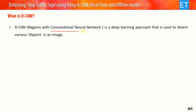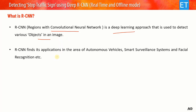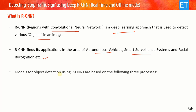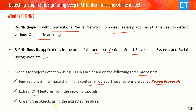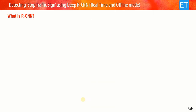RCNN stands for Regions with Convolutional Neural Network. It's a deep learning approach used to detect various objects in an image. RCNN finds applications in autonomous vehicles, smart surveillance systems, facial recognition, and more. Models for object detection using RCNN are based on three steps: first, finding regions in the image that might contain an object — called region proposals; second, extracting features from these regions using CNN; and third, classifying objects based on those extracted features.